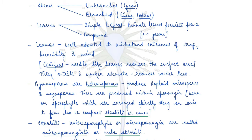Leaves are well adapted to withstand extremes of temperature, humidity and wind. Conifers have needle-like leaves which reduce the surface area, and they have a thick cuticle and sunken stomata which reduce water loss. Gymnosperms are heterosporous — they form two types of haploid spores: mega spores (female) and micro spores (male), produced within sporangia. Sporangia are borne on sporophylls arranged spirally along an axis, forming a lax or compact strobilus or cone.